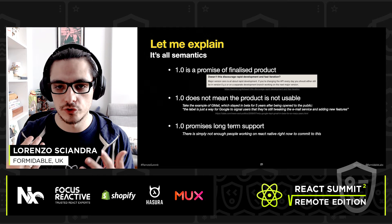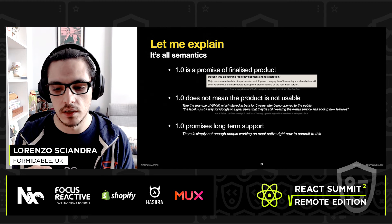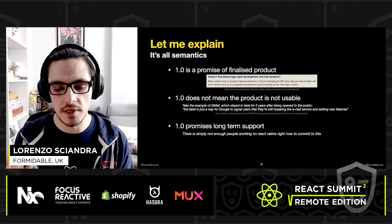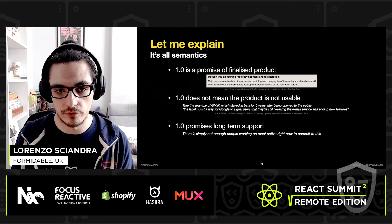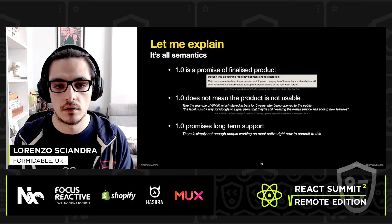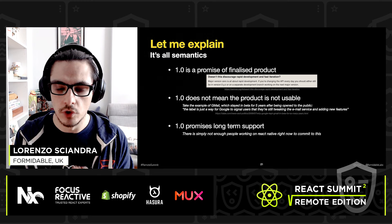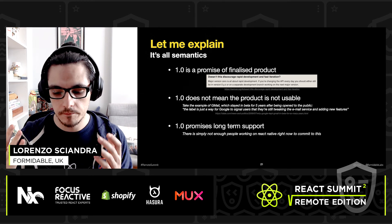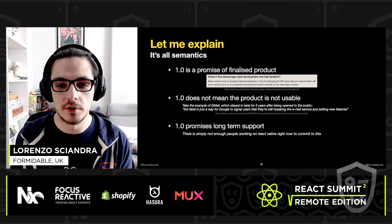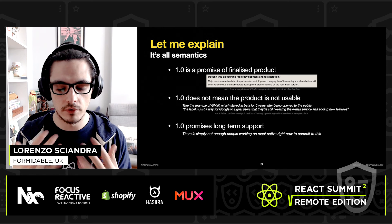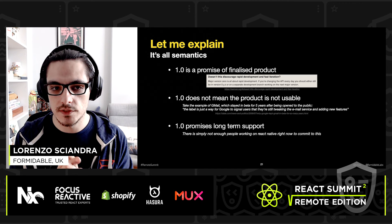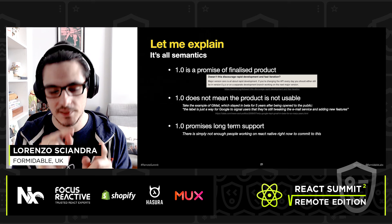It's a promise saying: this is complete, it works the way it should, the way I envisioned it. It also brings with it a promise of long-term support — we're not used to many major releases one after the other in bigger software without massive breaking changes, and usually we'd expect the major version to be supported for a long time. But 1.0 doesn't mean the product is unusable before then. Take Gmail — when it was released to the public, it was still in beta.